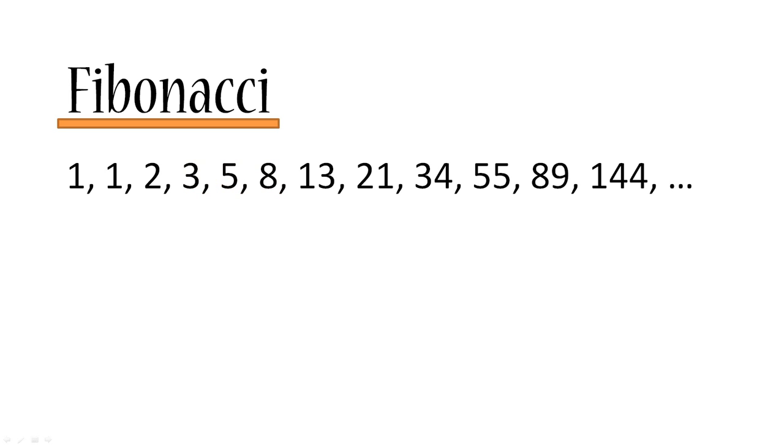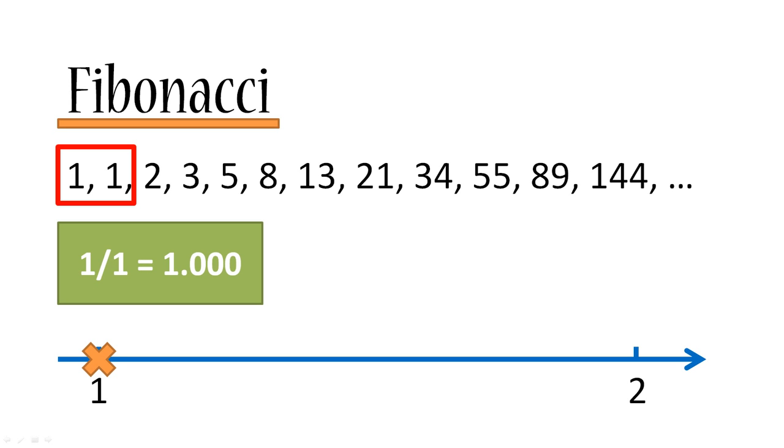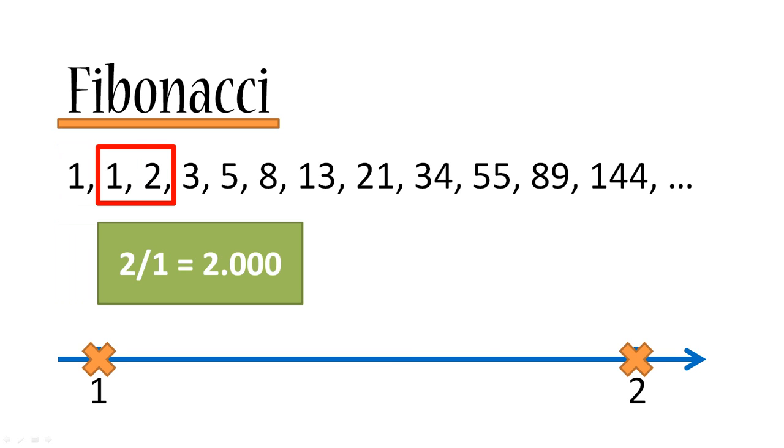Let's quickly plot the number one and number two on a horizontal axis. Now what we're going to do is go through the sequence and take every number and divide it by the previous number in the sequence and plot our answer on the same axis. So one divided by one equals one, we've plotted it with an orange cross. Now let's divide two by one and we get two.